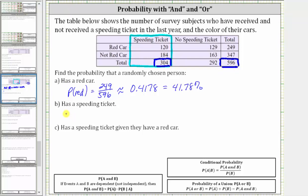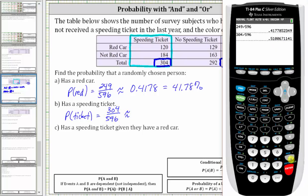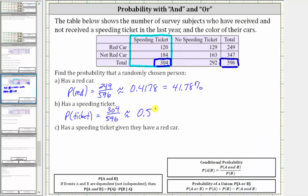And therefore the probability of a ticket is equal to 304 divided by 596, which to four decimal places is approximately 0.5101, which is 51.01%.